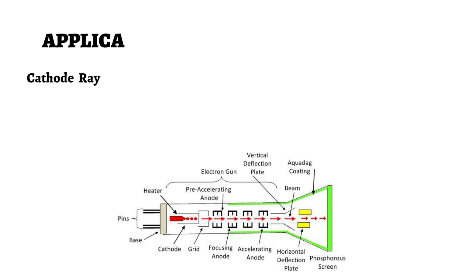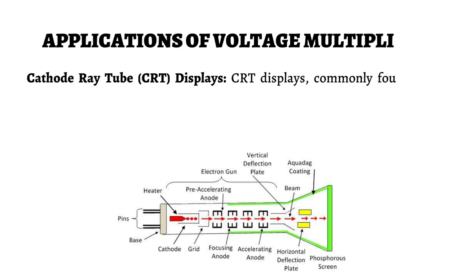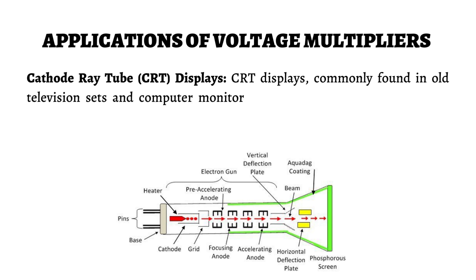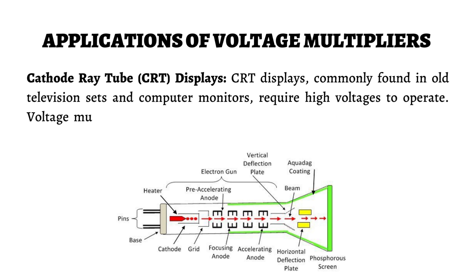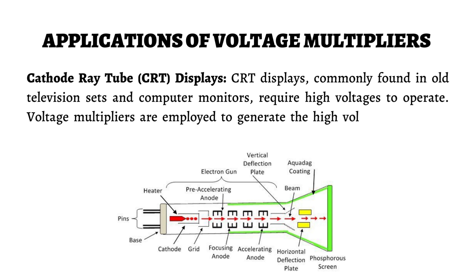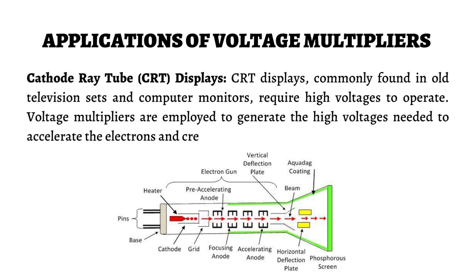CRT displays, commonly found in old television sets and computer monitors, require high voltages to operate. Voltage multipliers are employed to generate the high voltages needed to accelerate the electrons and create the image on the screen.